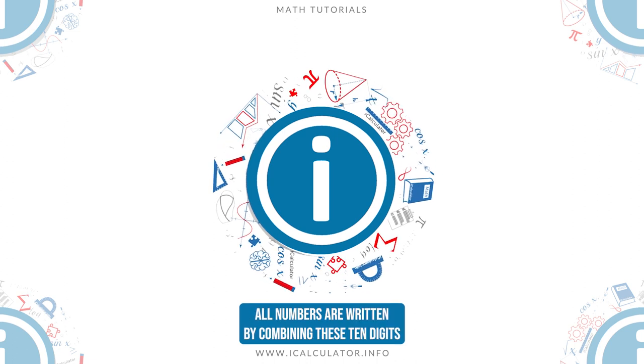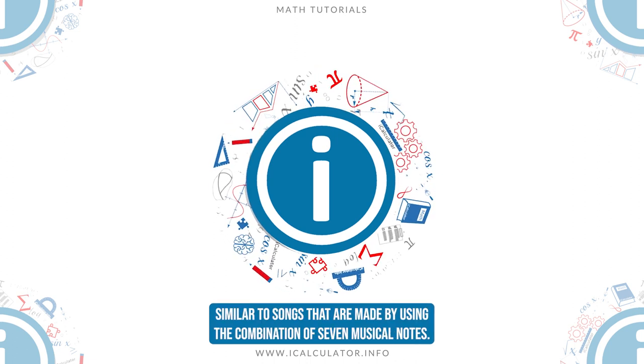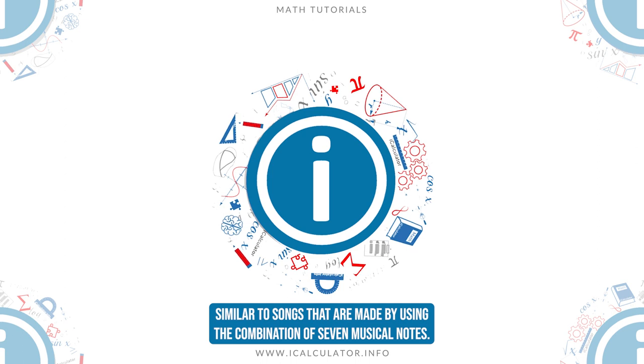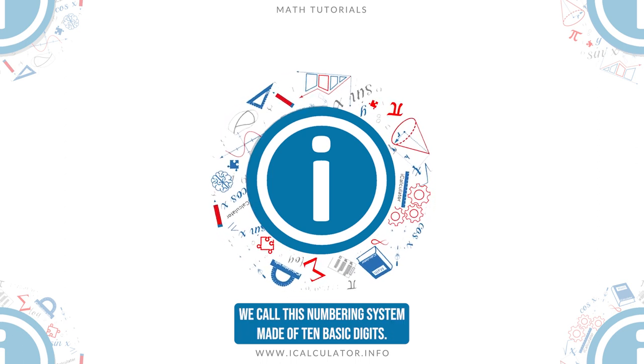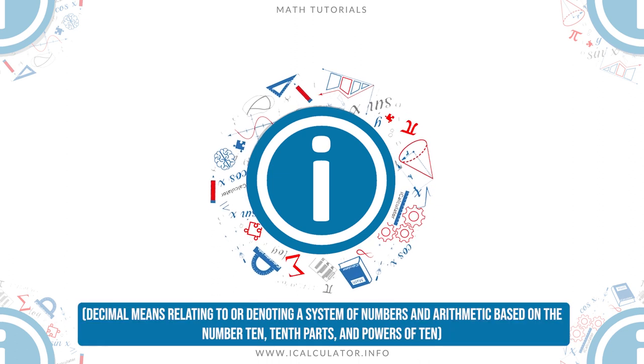All numbers are written by combining these 10 digits, similar to songs that are made by using the combination of 7 musical notes. We call this numbering system made of 10 basic digits the decimal system.